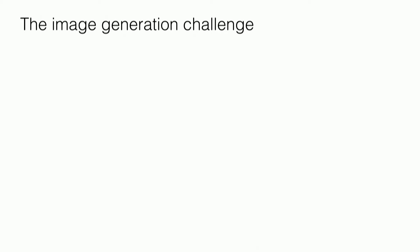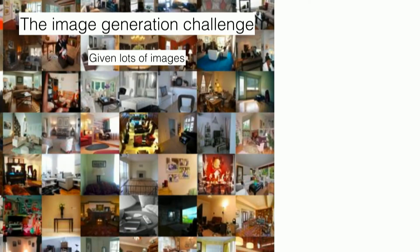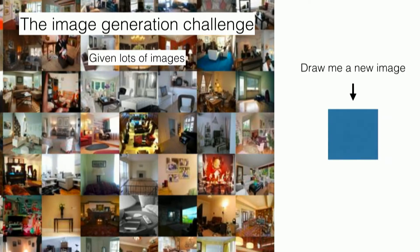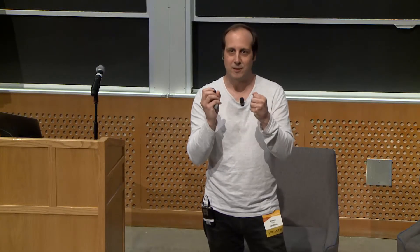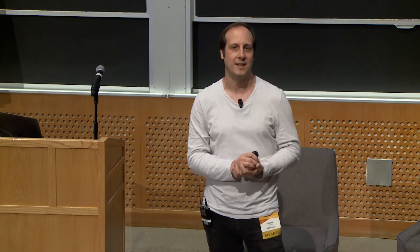Here is a challenge that doesn't require any annotation, but to be good at it you have to know something about the visual world — you need to understand what objects are. If I give you lots of images and the task is to understand what makes this particular class of images, your task is just to draw a new one. It doesn't require any labeling. The task is to build a system able to create a new image that looks as if it belonged to this particular class.